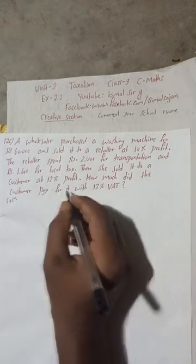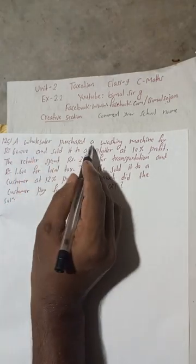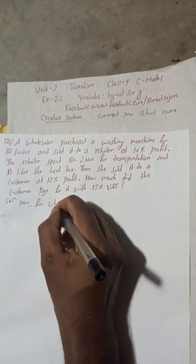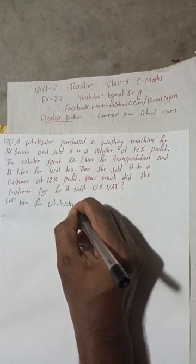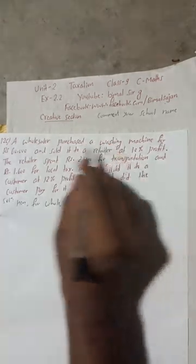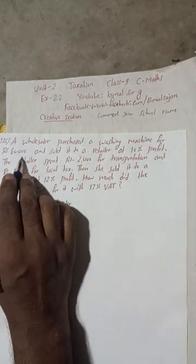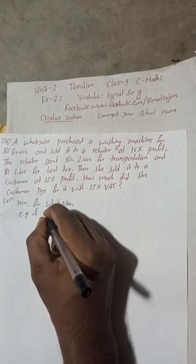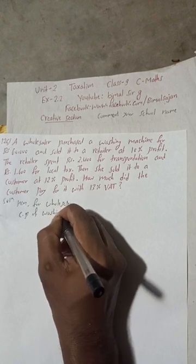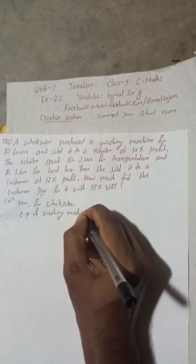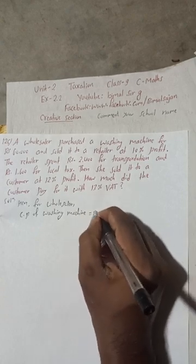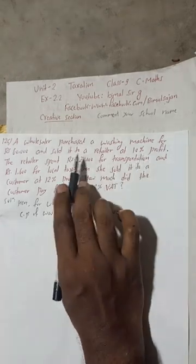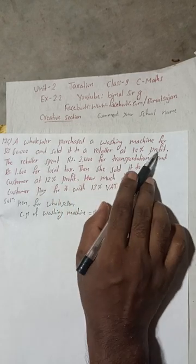For the wholesaler, the purchase price is the cost price. So for the wholesaler, cost price of the washing machine is equal to Rs 60,000. And she sold it to the retailer at 10% profit.